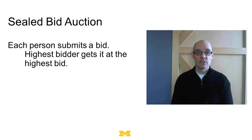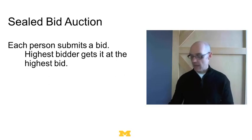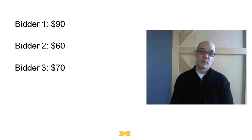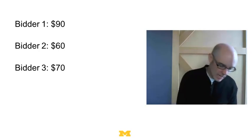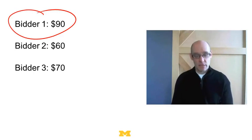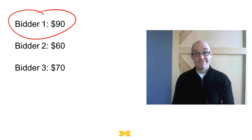Now let's go to the sealed bid auction. In some ways, even though it seems the simplest, it's the most complicated. Everybody puts in a bid, they're all sealed, and the highest bidder gets it and pays the highest price. If bidder one bids 90, bidder two bids 60, bidder three bids 70, bidder one gets it and pays 90 — not 70. So in this setting it makes sense to shade — to bid a little bit less.